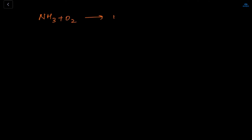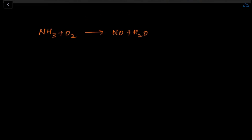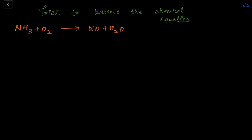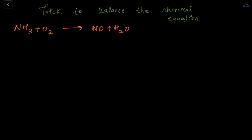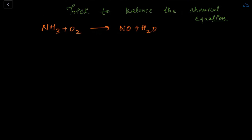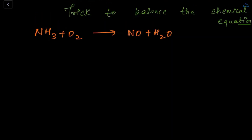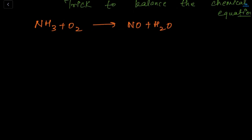Today I'm going to teach how to balance a chemical equation with a trick. Let me ask you this: NH3 + O2 giving NO + H2O. Do you know how to balance this? Adham, your mic is off. Okay, that's what I'm going to teach today. So here's my chemical equation: NH3 + O2 giving NO + H2O.